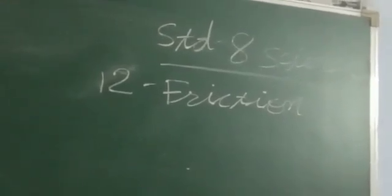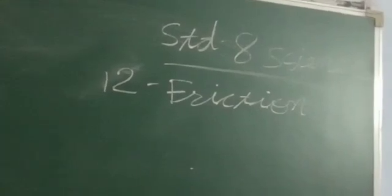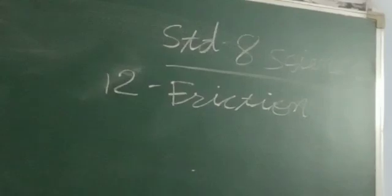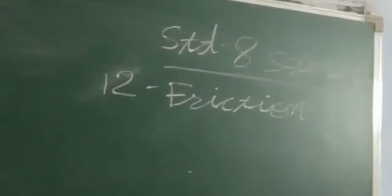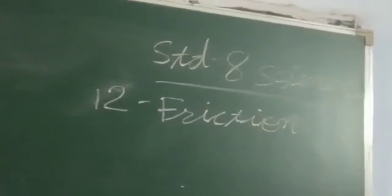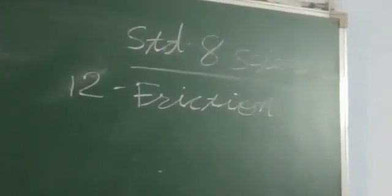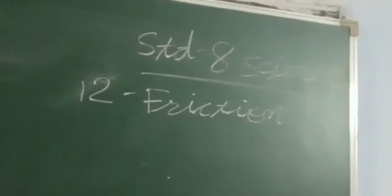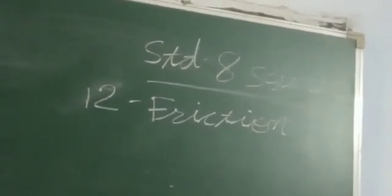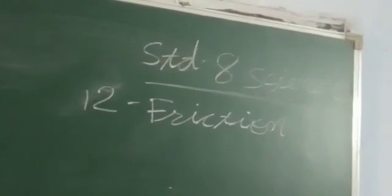The force required to overcome friction at the instant an object starts moving from rest is a measure of static friction. The force required to keep the object moving with uniform speed on the surface is a measure of sliding friction.